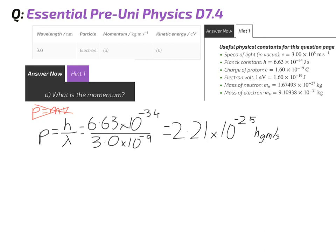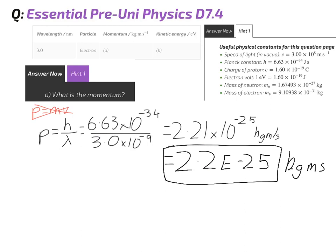When you put that into Isaac's physics, you'll need to do two significant figures because that's the number of significant figures your wavelength is given to, and if you want to know how to input it with the times 10 to the power of, what you can do is you can do 2.2 and then an E and then minus 25. That E means times 10 to the power of, which will be your final answer in kilogram meters per second.